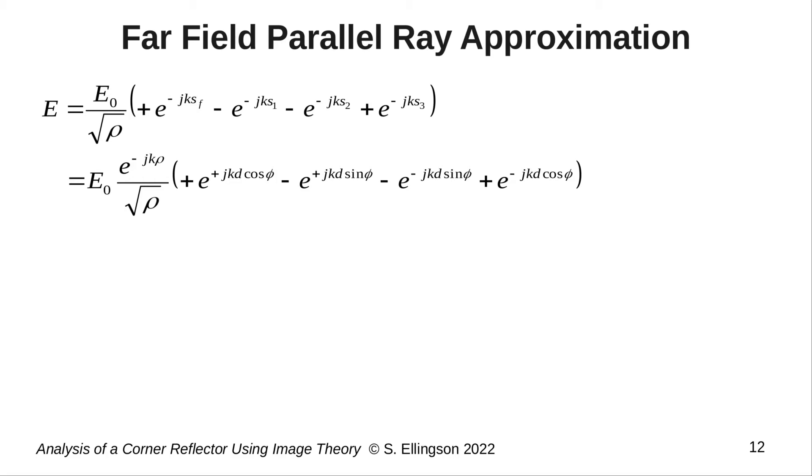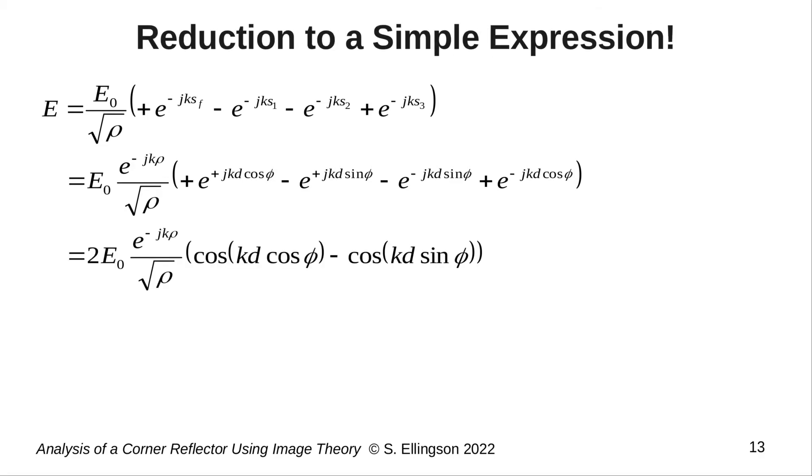Now we can simplify this expression quite a bit. You know that whenever you see sums of complex exponentials having exponents with opposite sign, these are actually cosine functions. So what we can do here is reduce these two pairs of complex exponentials to two cosine functions, as shown here. This is the expression we were looking for. Now all that remains is to plot this expression and interpret the results.